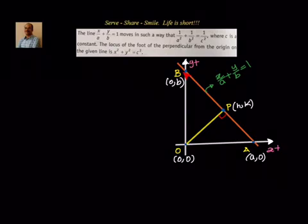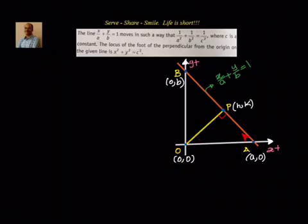So let's understand: the line x/a + y/b = 1 moves such that 1/a² + 1/b² = 1/c². We have to find the locus of the foot of perpendicular. From the origin, we draw a line perpendicular to the given line. We know the equation of the line; we have to find the equation of OP. The point of intersection is P(h, k). We will find it in terms of a and b, then find the locus of point P.